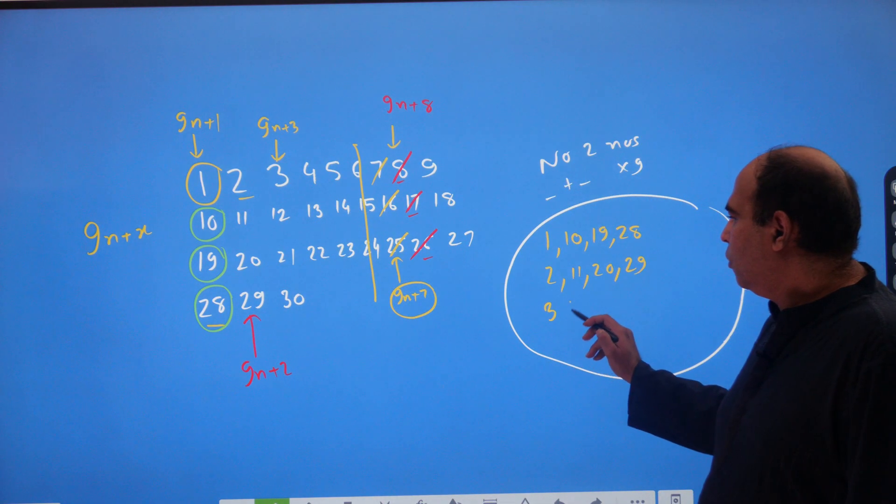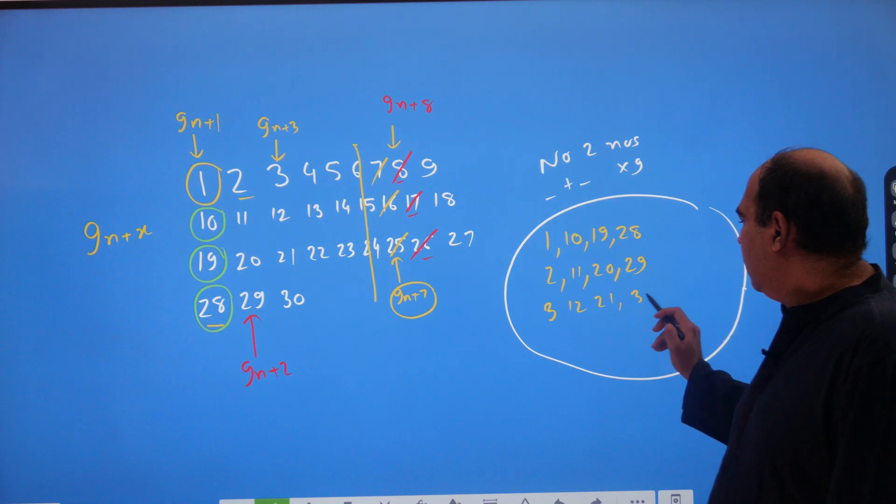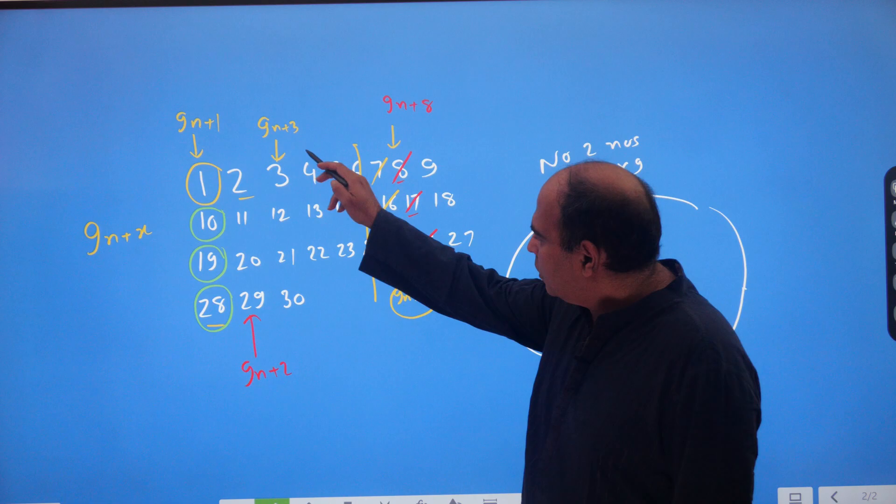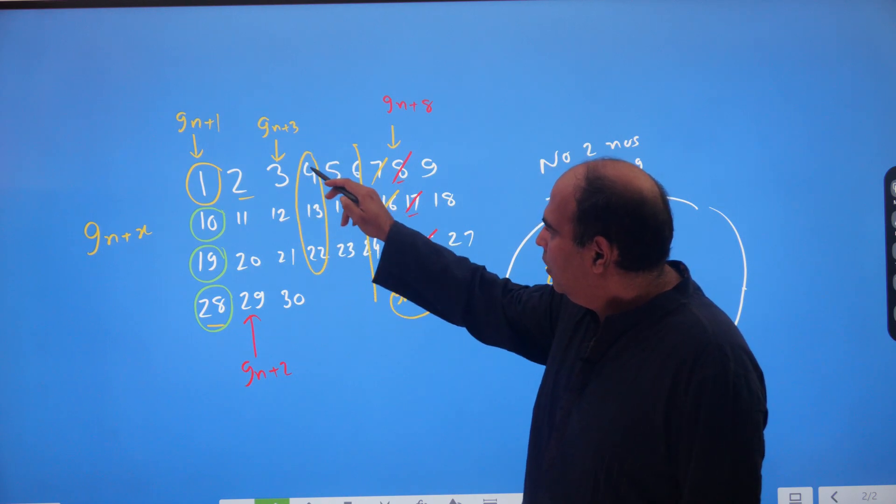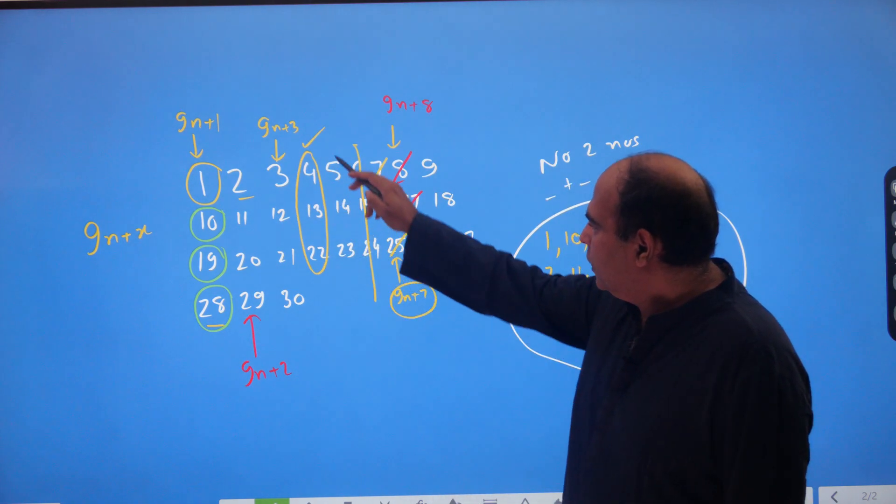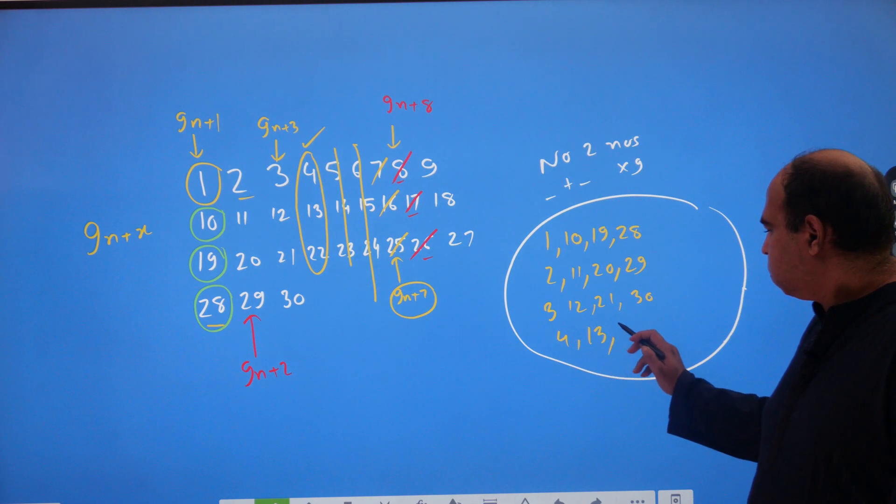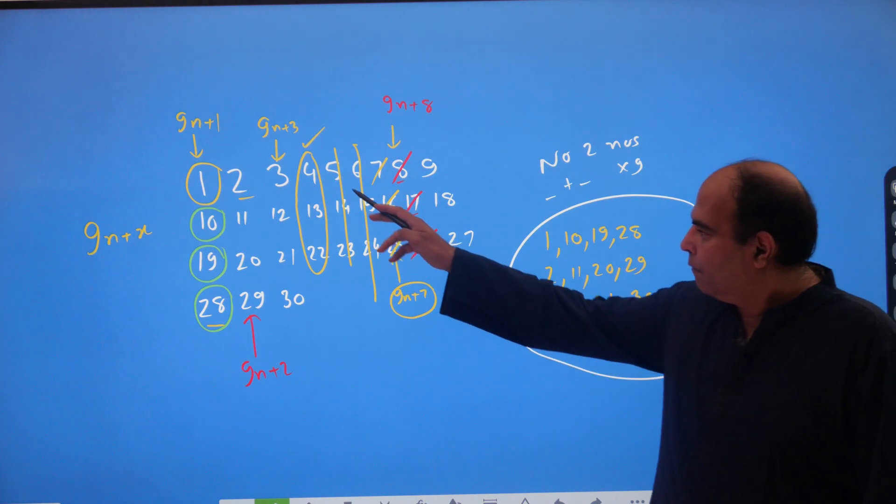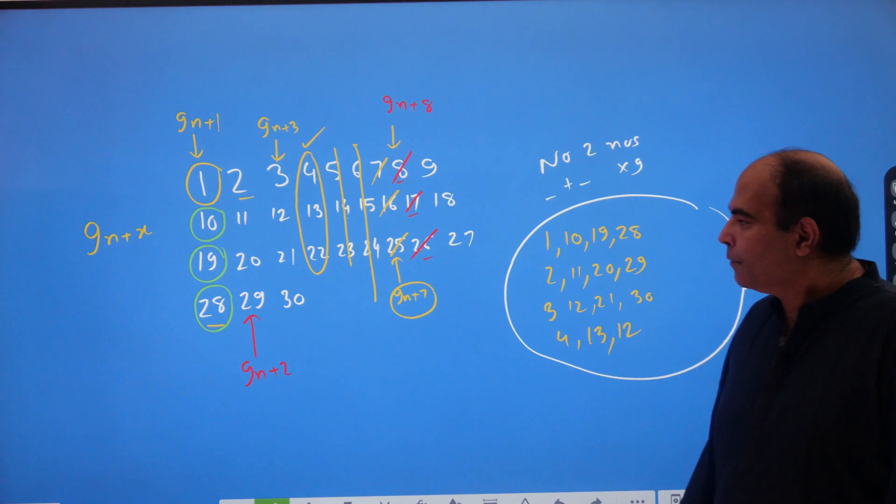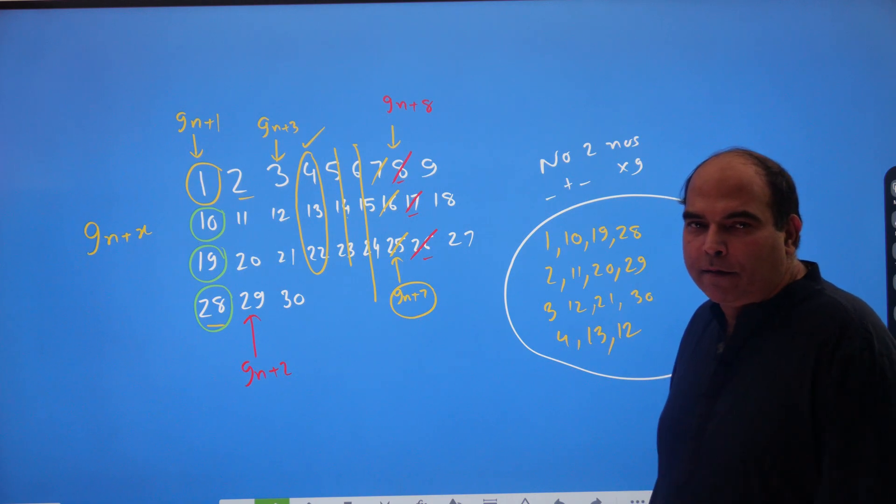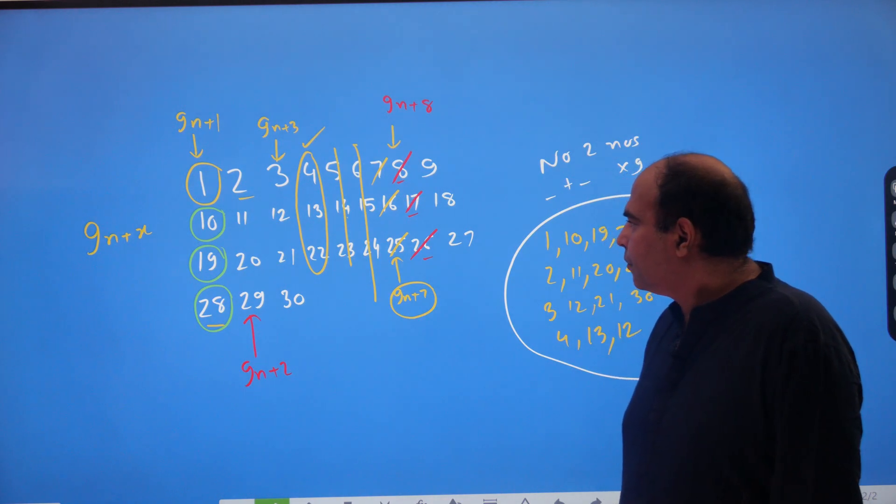So, 3, 12, 21 and 30. And take the 9n plus 4s. You take this and you reject this. So, you take 4, 13 and 22 and reject 5, 14 and 23. You reject these. So, you are not going to get any 2 numbers having a multiple of 9 as a sum.